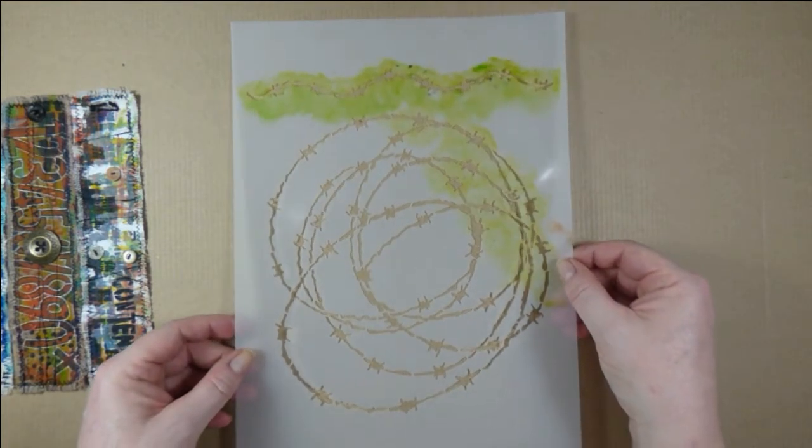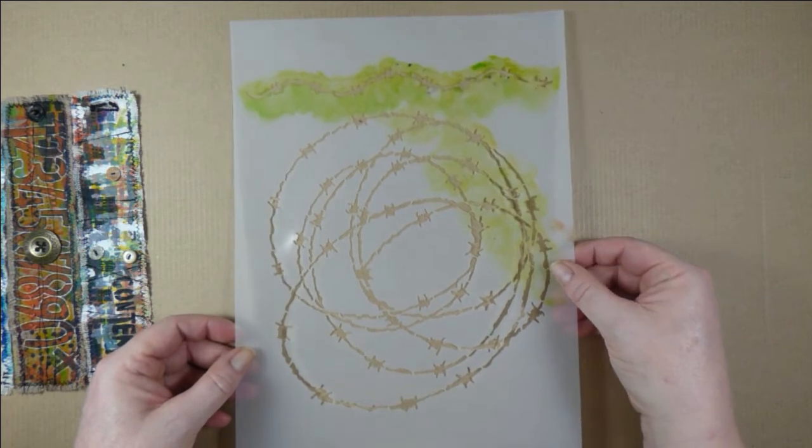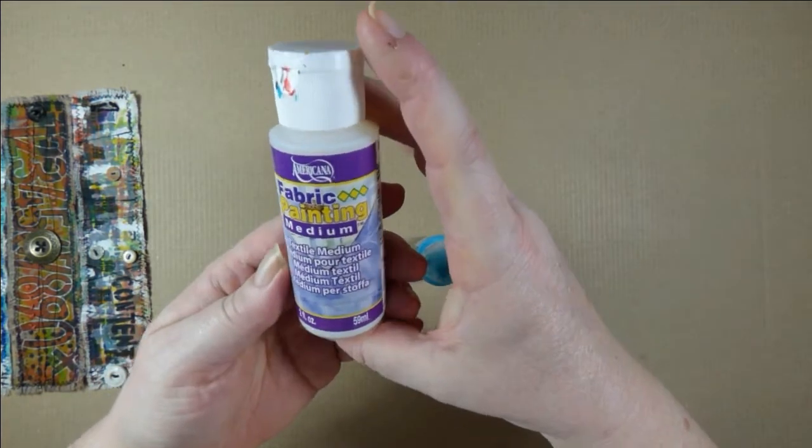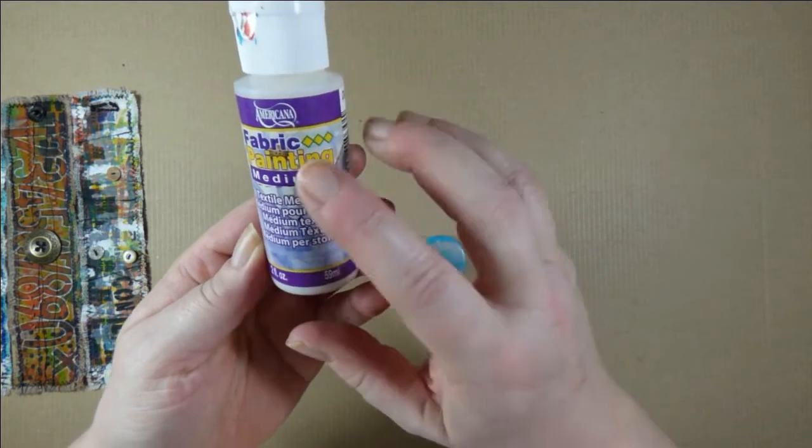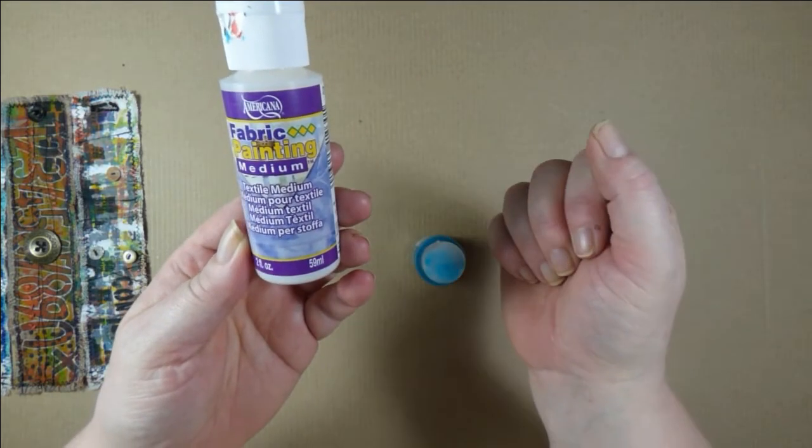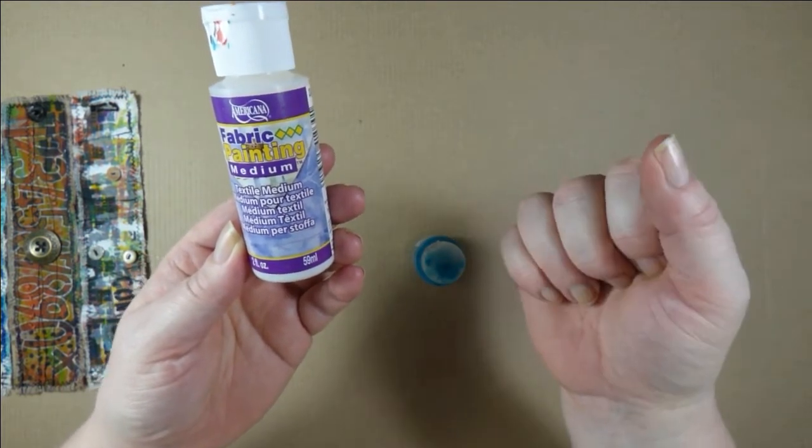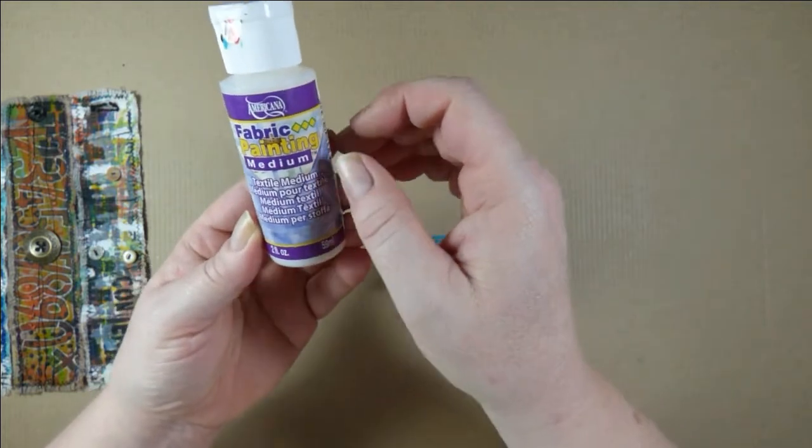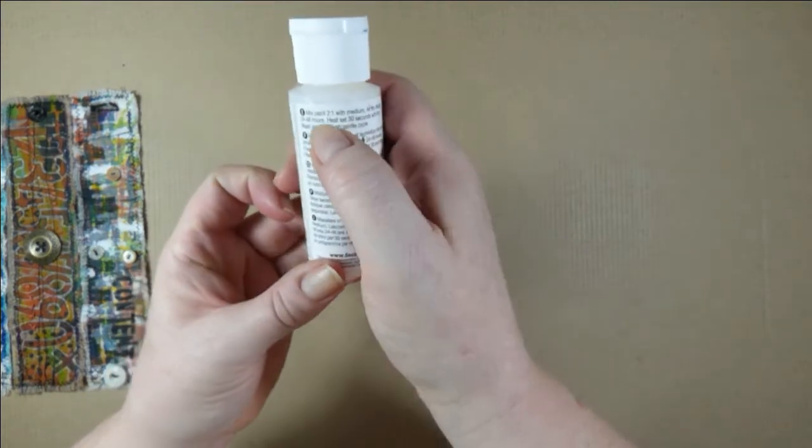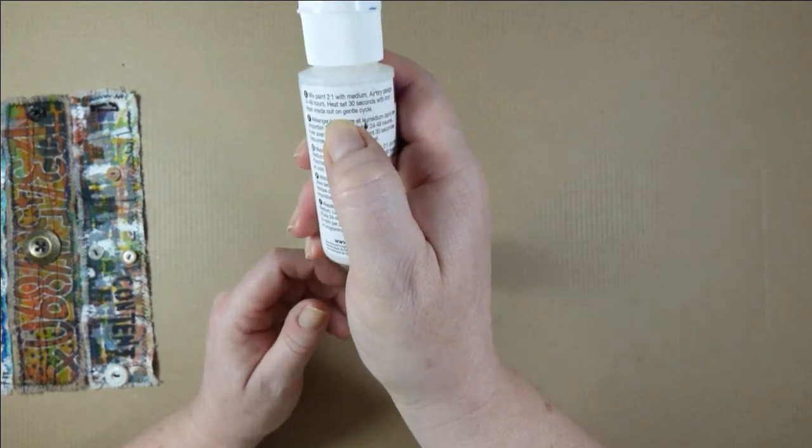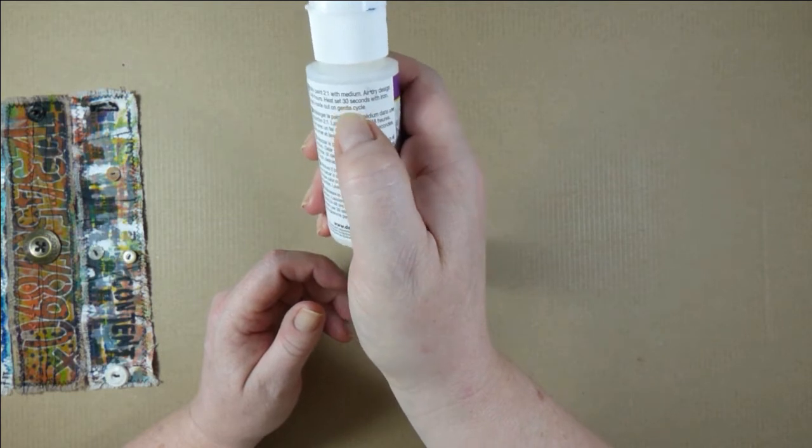The fabric painting medium that I have used is from DecoArt Americana, and it helps turn acrylic paints into paint that sticks to fabric and doesn't wash out when you put it in the washing machine. It has a label on the back that says how you have to mix it to make it work, and it says you should heat set it with an iron.